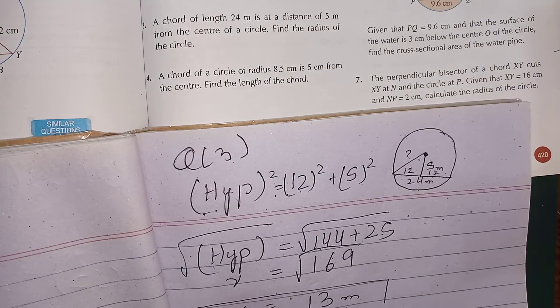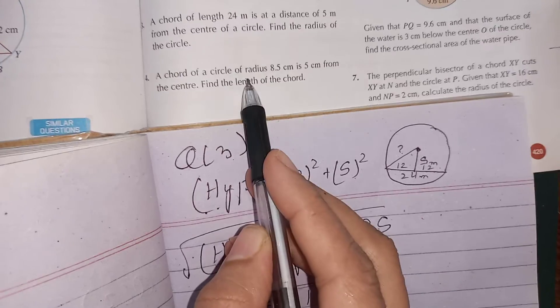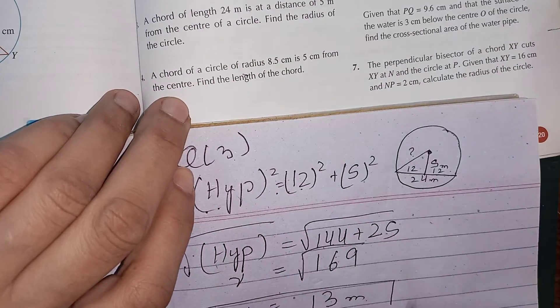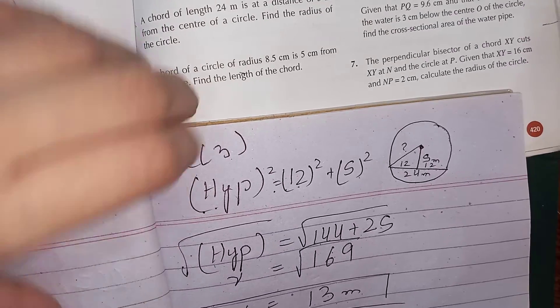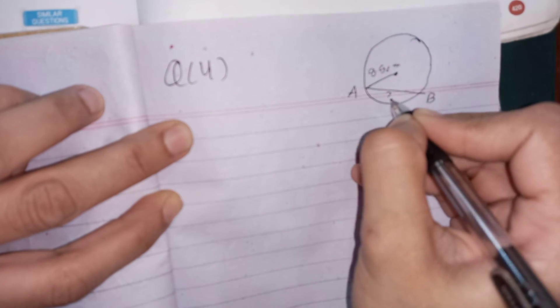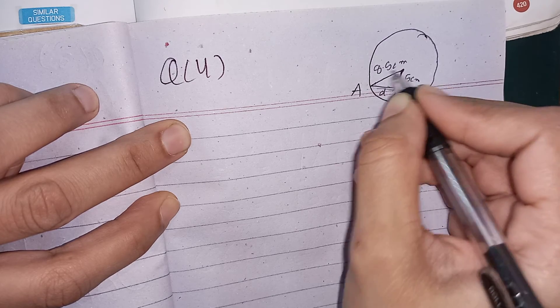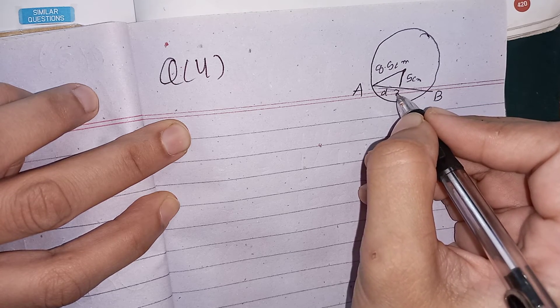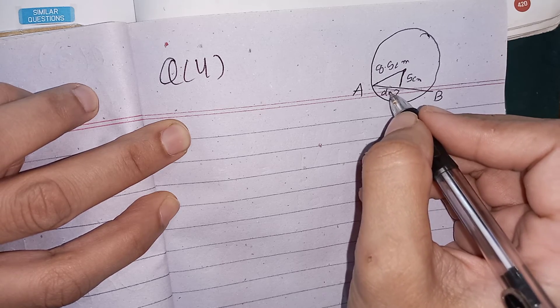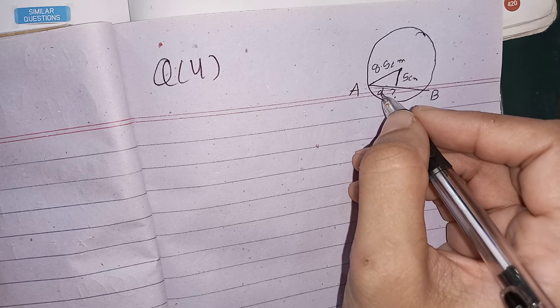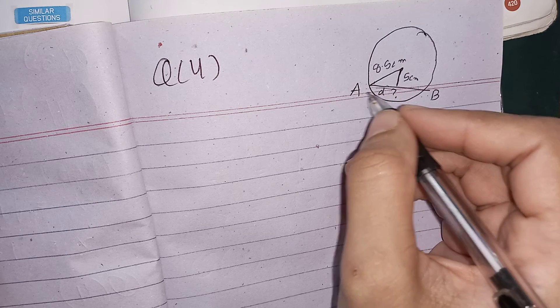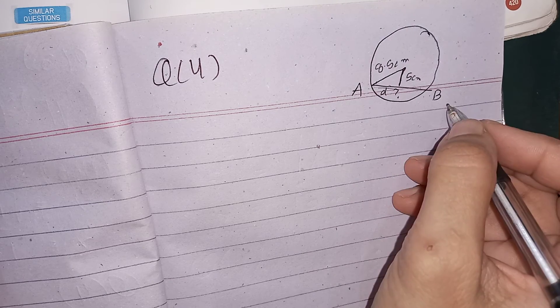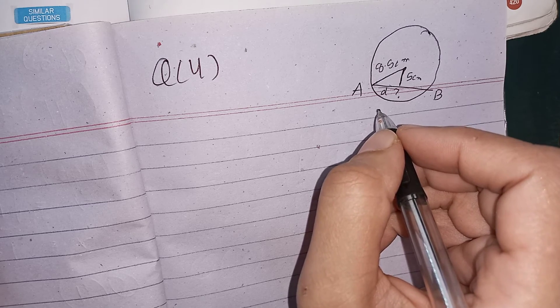Question 4: The radius is given as 8.5 cm and the distance from the centre is given. Find the chord length. Use the Pythagoras theorem to find half the chord length, then multiply by 2 using property number 1 to get the full chord length. I will not solve this one — you can attempt it on your own.